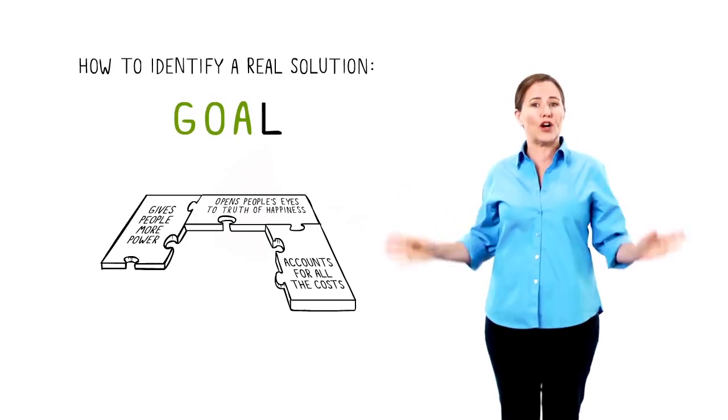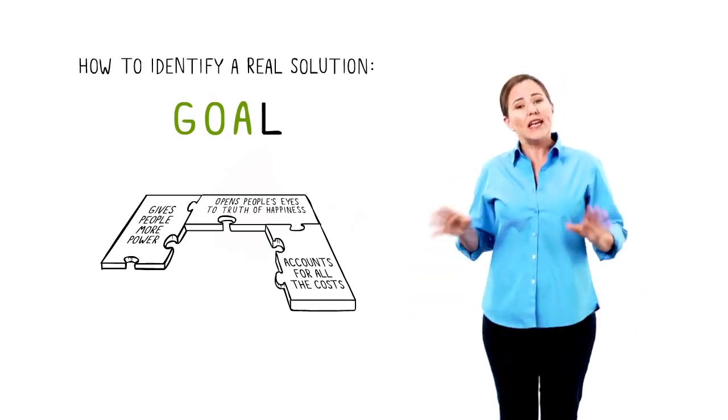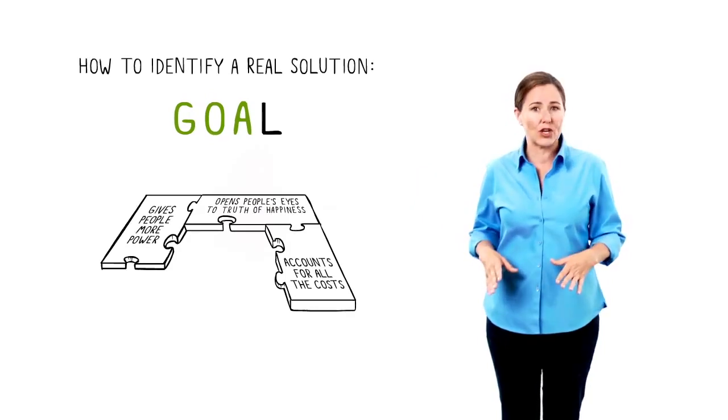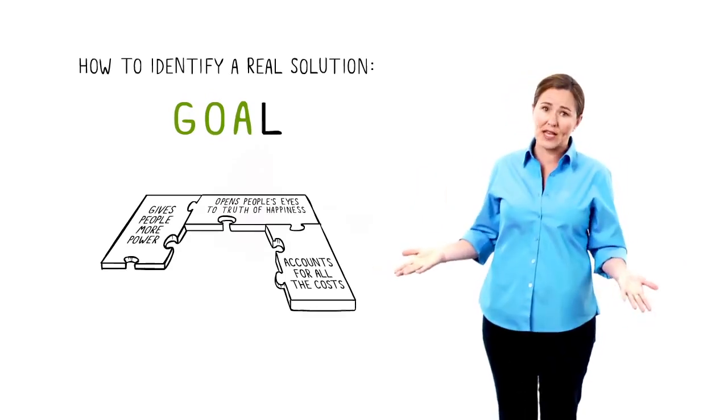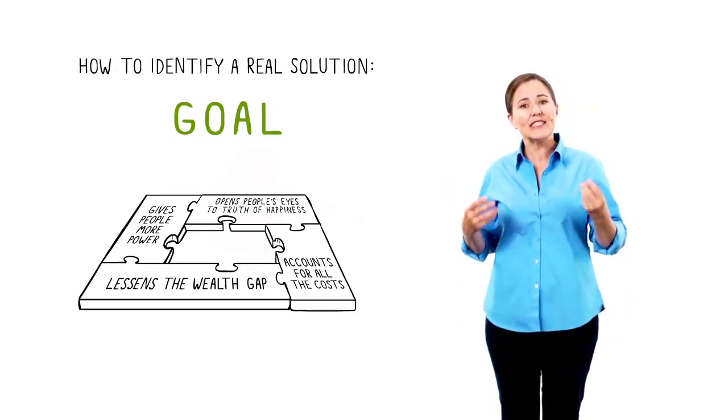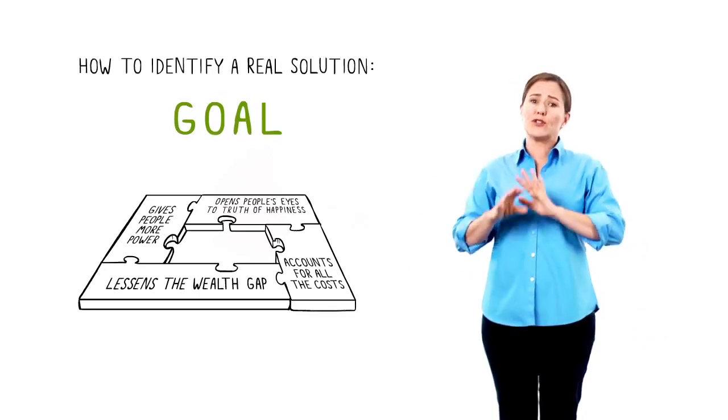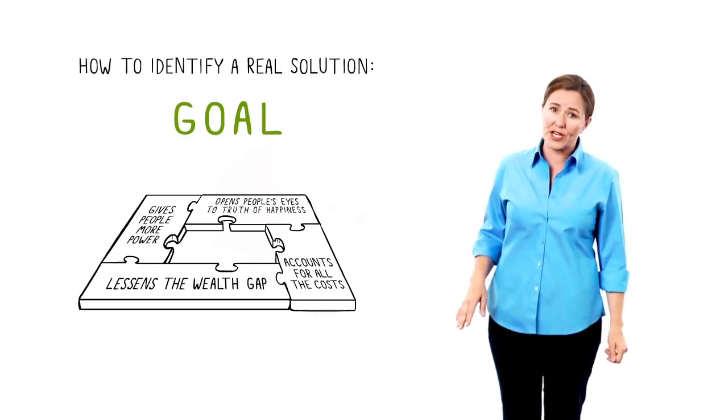A accounts for all the costs it creates, including the toll it takes on people and the planet. In other words, it internalizes costs instead of externalizing them, as most businesses do today. L lessens the enormous wealth gap between those who can't even meet their basic needs and those who consume way more than their fair share.